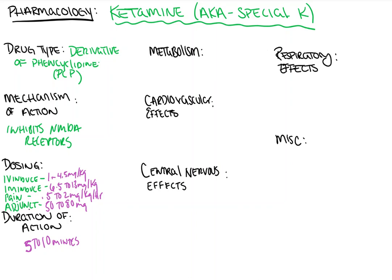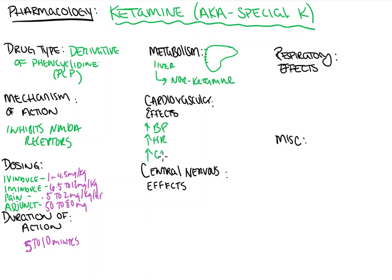Ketamine is metabolized by the liver — and that's my terrible drawing of a liver here — and it's metabolized to norketamine, which is an active metabolite, but far less potent than the original form. Moving on to systems: the cardiovascular system. Ketamine increases blood pressure, increases heart rate, and as a result increases cardiac output.